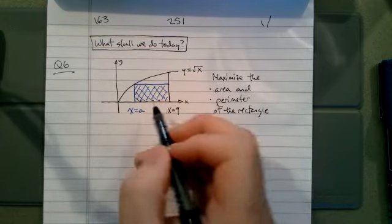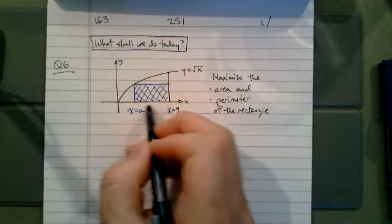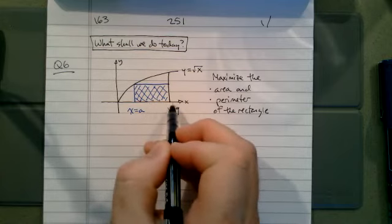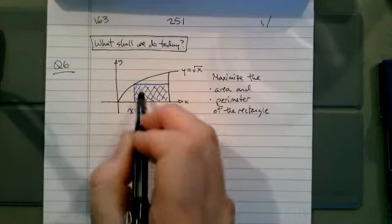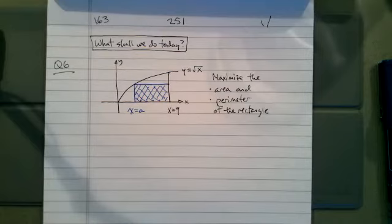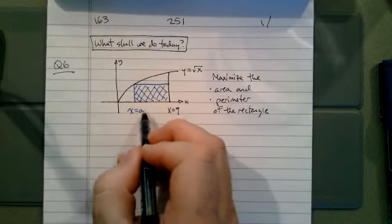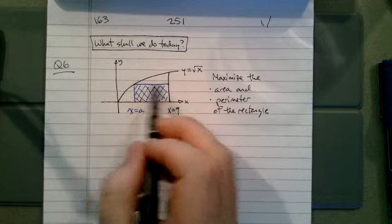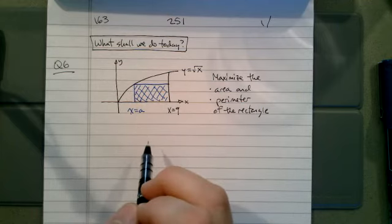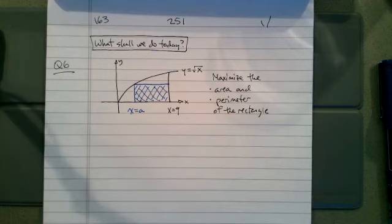If a is equal to four then the width down here will be nine minus four or five and then the height will be two and so that gives you, you can calculate the perimeter and the area that way. So then the question becomes if we just put this point at a, what is an expression for the area of the rectangle? What's an expression for the perimeter of the rectangle and how can we maximize those values? By taking a derivative, setting it equal to zero and solving.